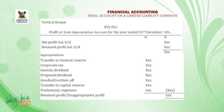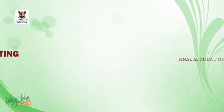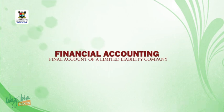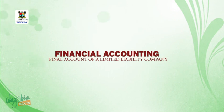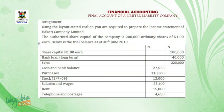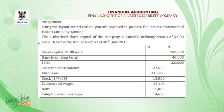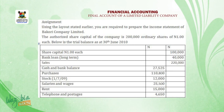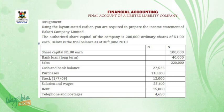We are going to have a short break. Welcome to this last segment. On this segment, you are going to have an assignment. Using the layouts stated earlier — the T-format and the vertical format — you are required to prepare the income statement of Bakuri Company Limited. The authorized share capital is 200,000 ordinary shares of one naira each. Below is the trial balance as at 38th of June 2010.